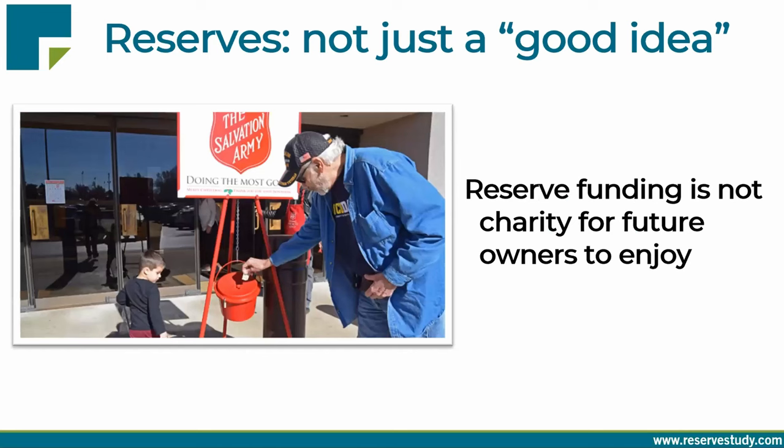In the on-site manager's office, equipment owned by the management company — not the association — shouldn't be funded through reserves. This association also has a concrete underground parking garage protected by building waterproofing, so we can't reasonably anticipate the eventual need for major reconstruction. Since we can't reasonably anticipate when the building and its underground garage will need reconstruction, it fails test number two and shouldn't appear in the reserve component list.